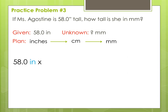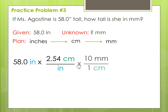Beginning with our given, which is the 58.0 inches, multiplied by our first conversion factor — 2.54 centimeters per inch. Notice that the unit we want at this step is centimeters, and the unit we're getting rid of is inches; it's in the denominator so it will cancel out. Then our next conversion is times 10 millimeters for every one centimeter. In this step we're going to millimeters, so millimeters has to be on top; we're getting rid of centimeters, so centimeters is in the denominator. When we plug all of that in, we get 1473.2 millimeters.